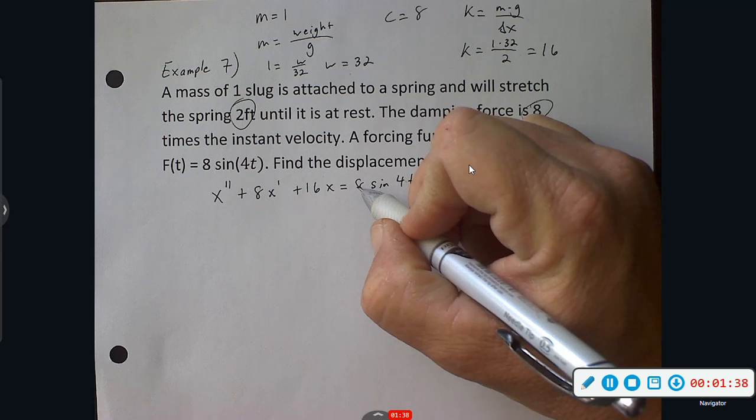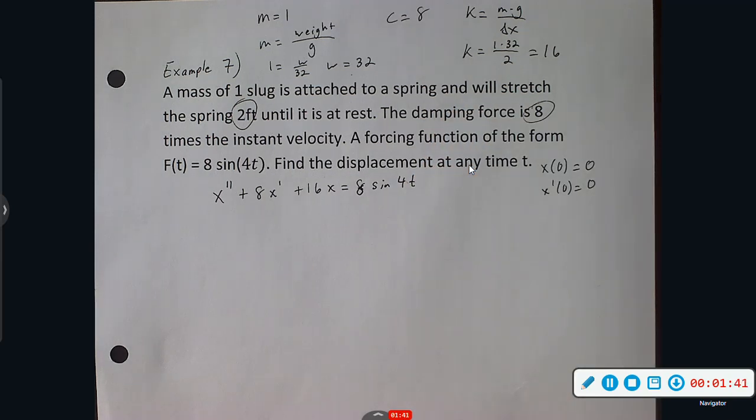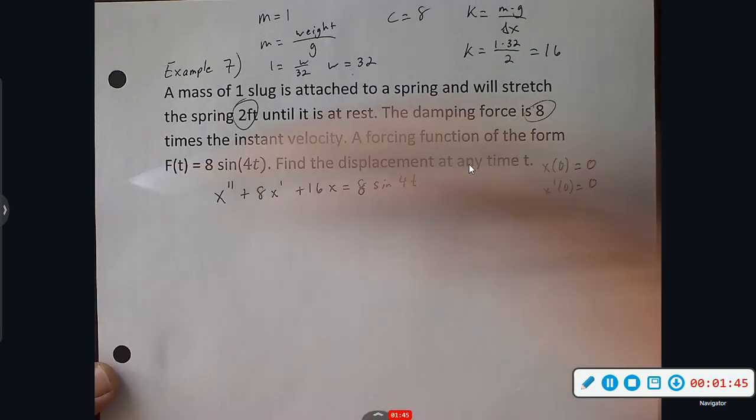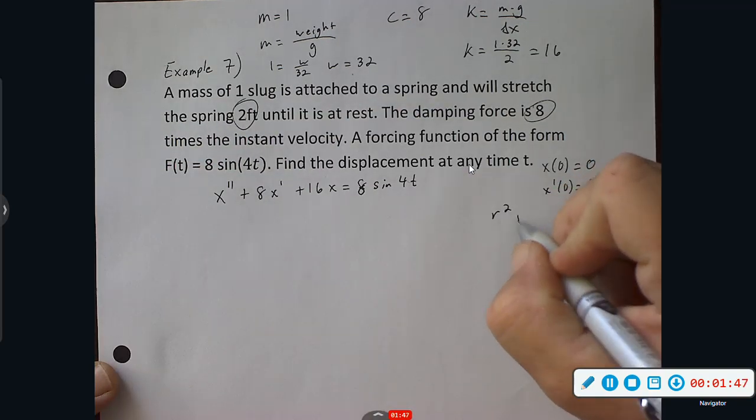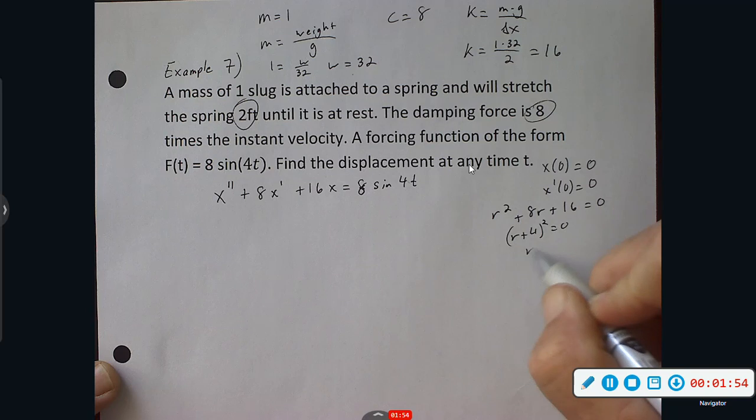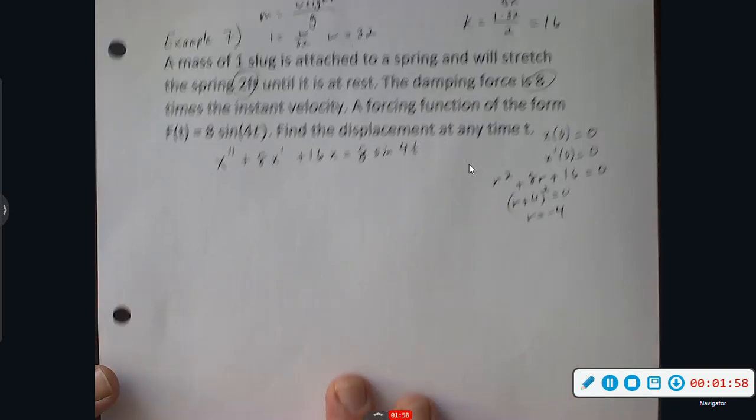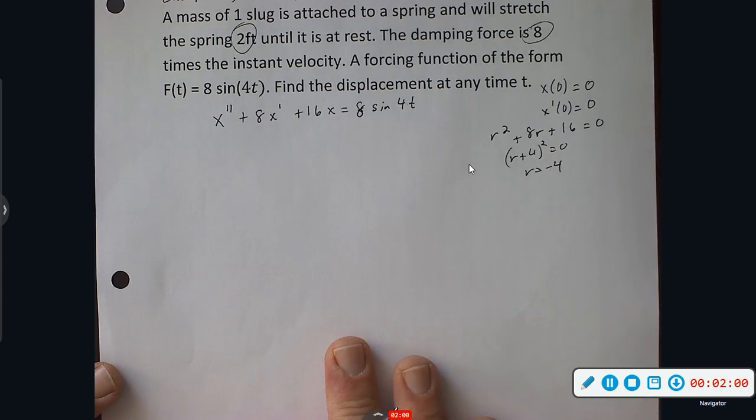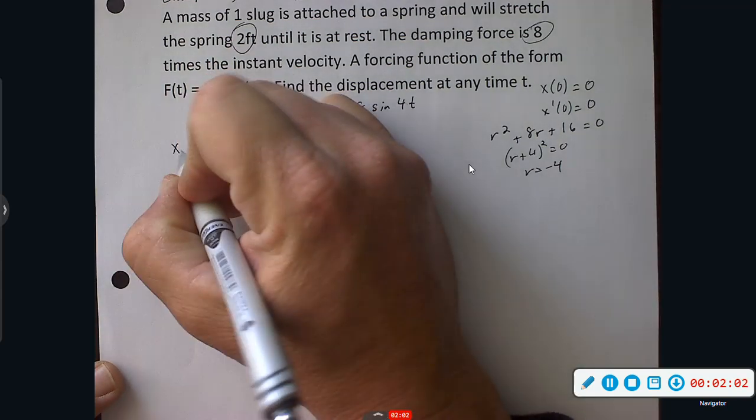This is an ODE. Alright, this one's a little bit easier, a little bit clearer. So just here, let's do it over here this time. R squared plus 8R plus 16, so that's going to be case number two, because R is negative four. I'm going to move this a little bit. Let's write out our Xc(T).